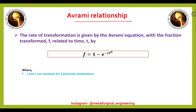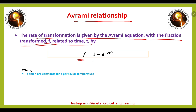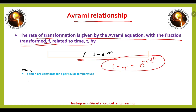First, we will see the Avrami relationship. In Avrami kinetics, the rate of transformation is given by the Avrami equation. The transformed fraction f is given by: f = 1 - e^(-ct^n), so 1 - f = e^(-ct^n), where c and n are constants for a particular temperature. We can put the fraction transformed into this equation to calculate the constants c and n.